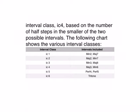The following chart shows the various interval classes. IC1 would be a minor second or a major seventh, IC2 would be either a major second or a minor seventh, IC3 a minor third or a major sixth, IC4 a major third or a minor sixth, IC5 are perfect fourths and fifths, IC6 is a tritone.